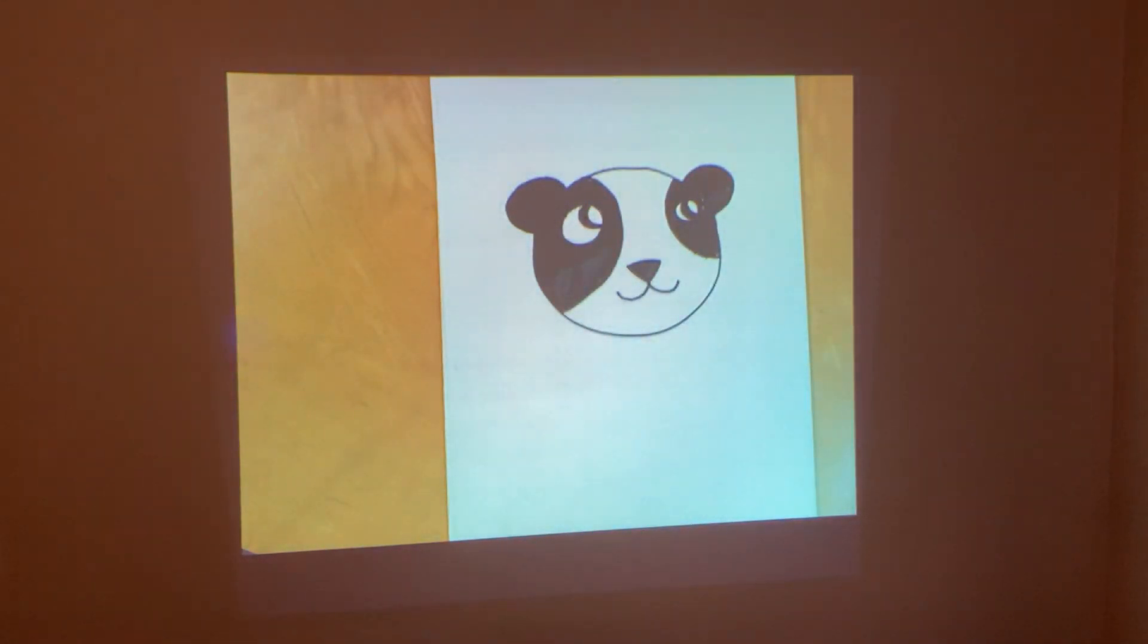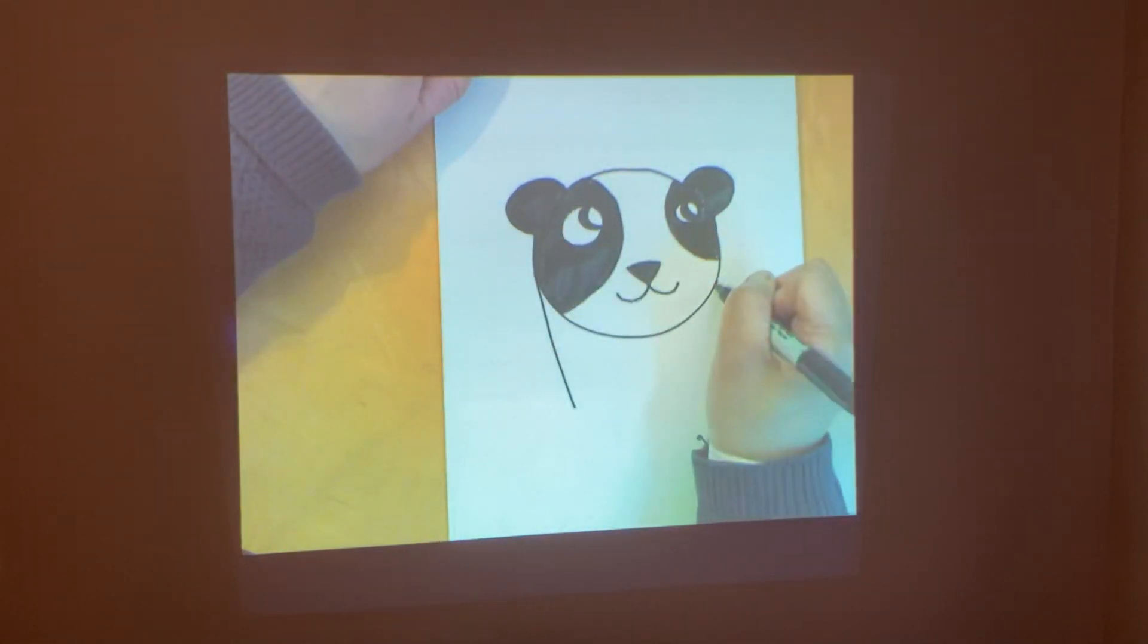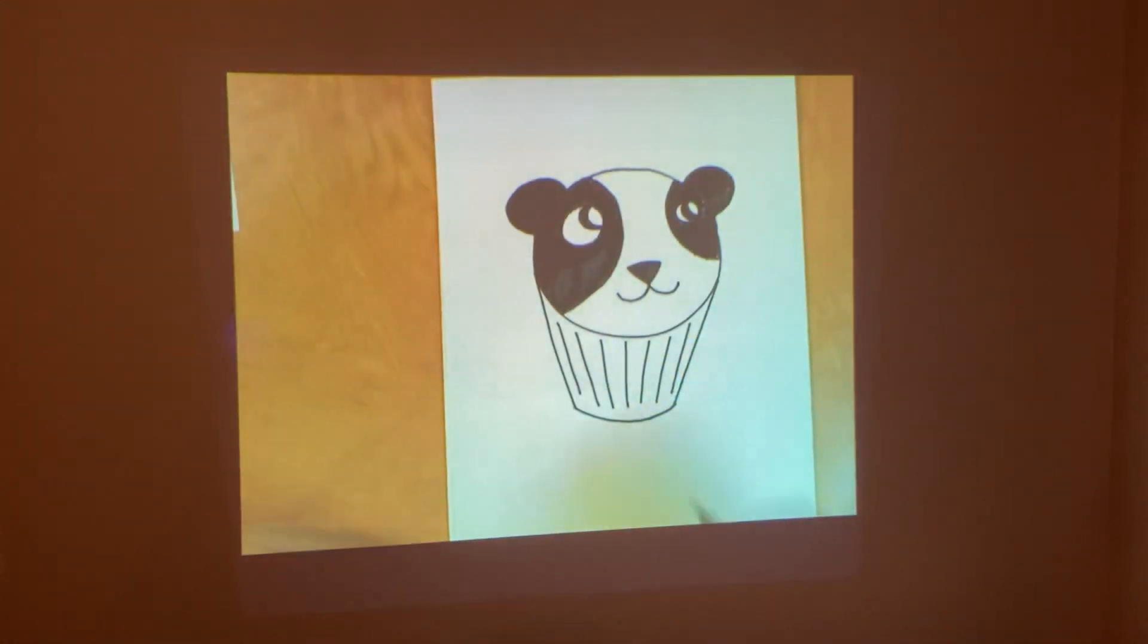Okay. Now let's draw the cupcake portion. Again, draw lines that kind of converge down. Draw the bottom part. Add some lines. Make it look cupcake-like. So adorable. Now to sign it. This is for Leia.